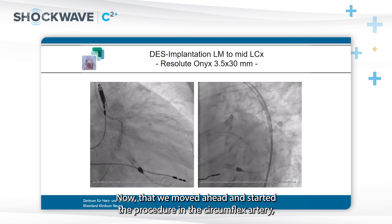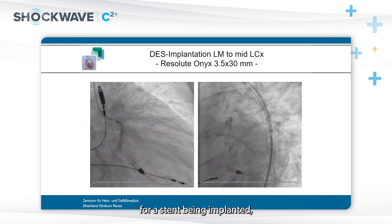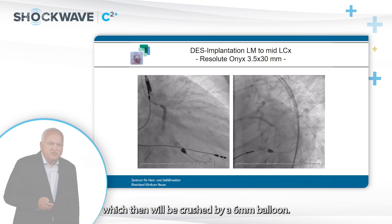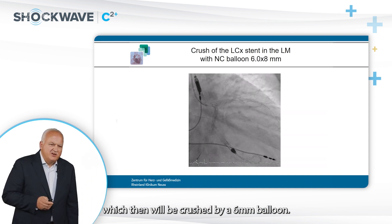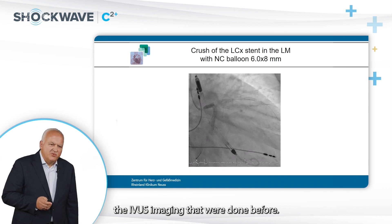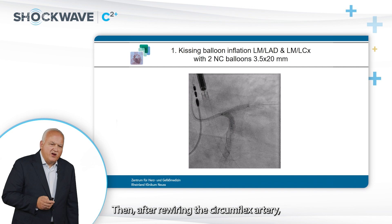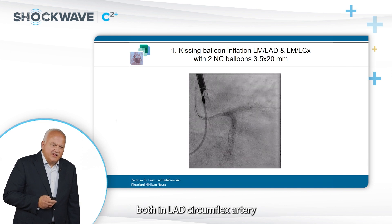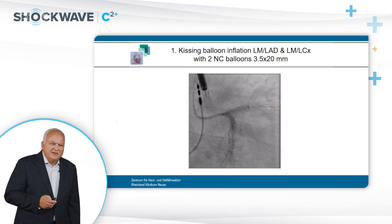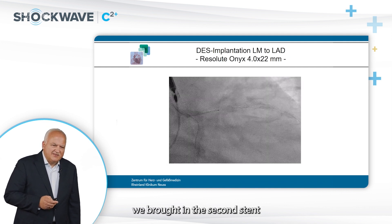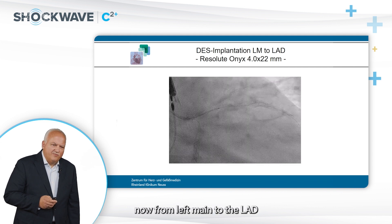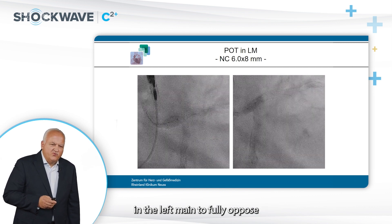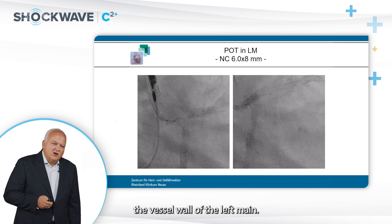We then moved ahead with the procedure in the circumflex artery. The first stent was implanted with a small portion hanging into the left main, which was then crushed by a 6 mm balloon. Dimensions were judged by prior IVUS imaging. After rewiring the circumflex artery, we did the first kissing with two 3.5 mm balloons in both LAD and circumflex artery together in the left main. Then the second stent was brought from the left main to the LAD, followed by a POT procedure in the left main to fully appose the stent struts against the vessel wall.